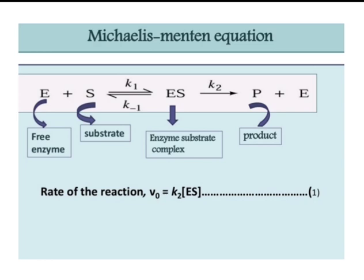Here, E represents the enzyme, S represents the substrate. The forward rate is K1, the reverse rate is K-1. The enzyme has active sites and the substrate gets joined — the substrate and enzyme form a complex or a tightly bound structure. This is E plus S giving ES. Then from ES there is a formation of product and the enzyme remains as it is.